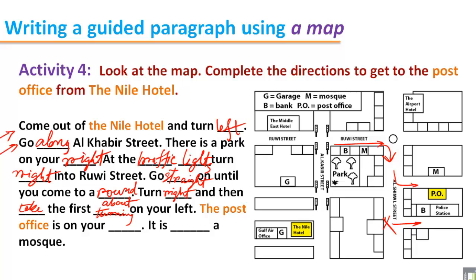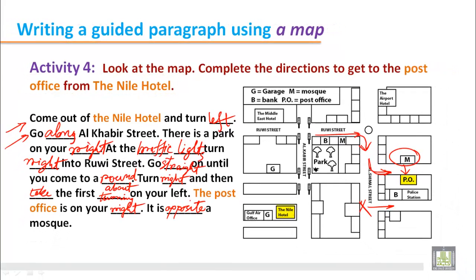The post office is on your right — we can find the post office here on the map. There is also another detail: it is just opposite a mosque. This is the mosque, and the post office is just opposite it. So these are the complete directions to go to the post office from the Nile Hotel.